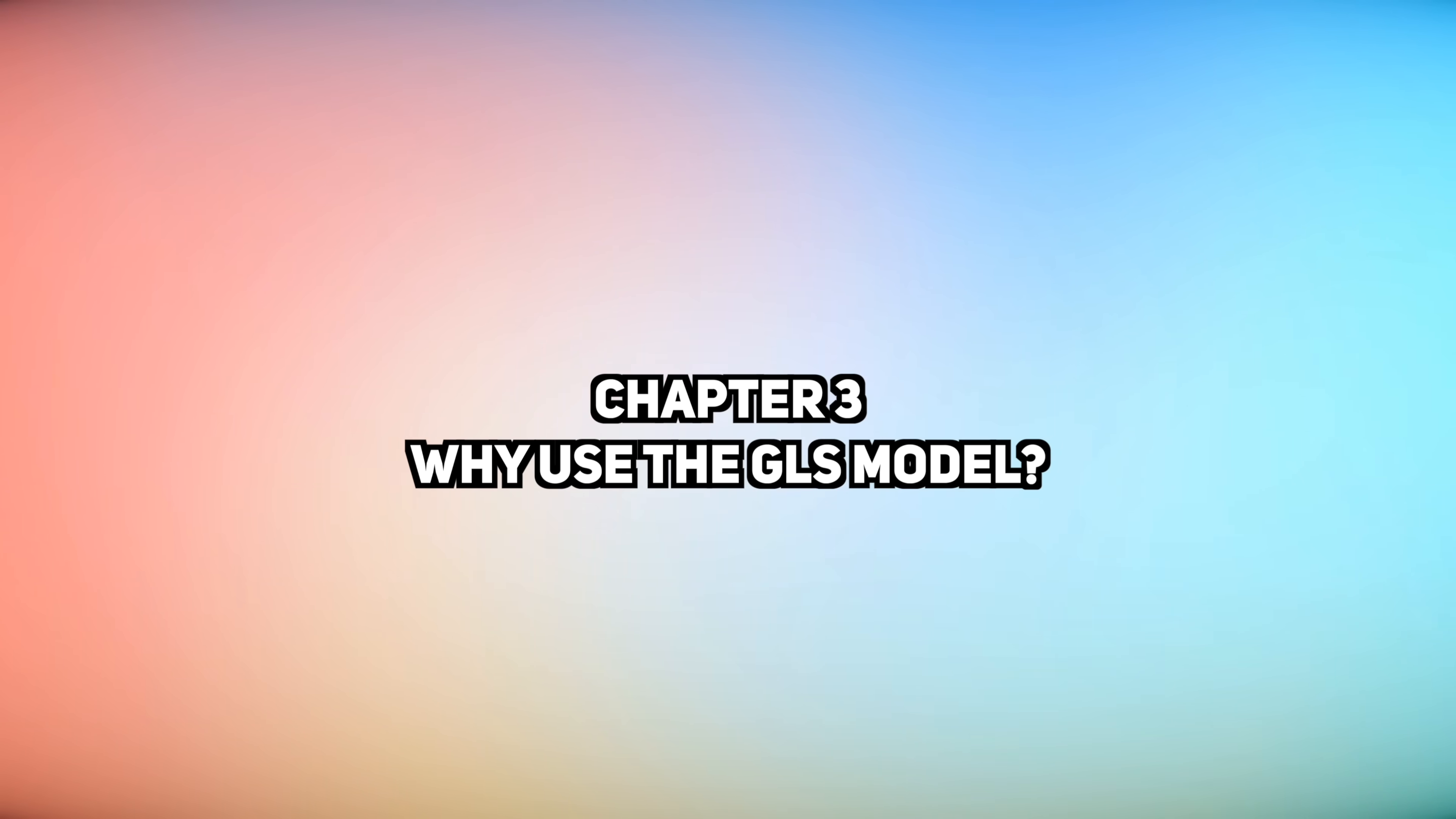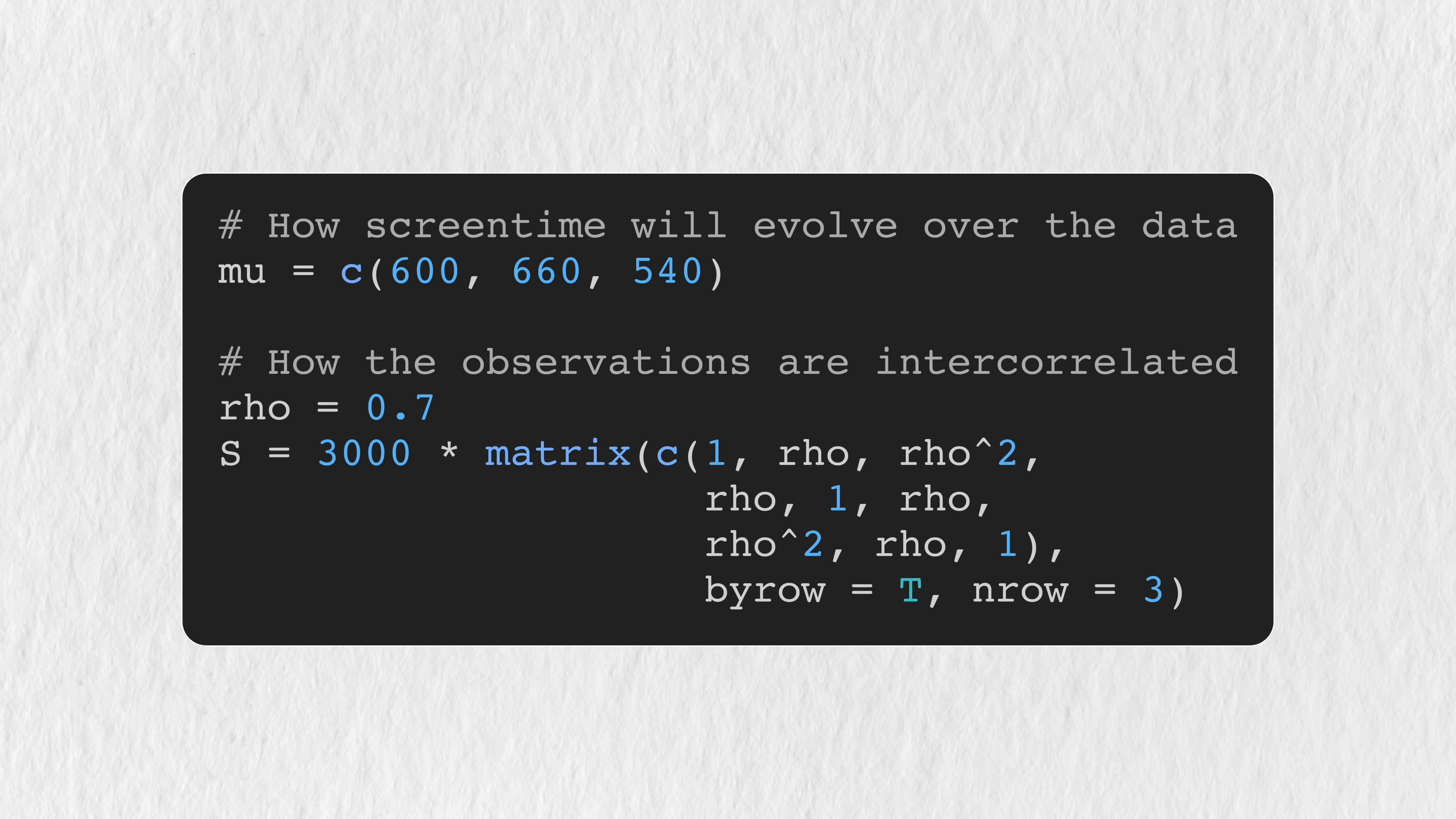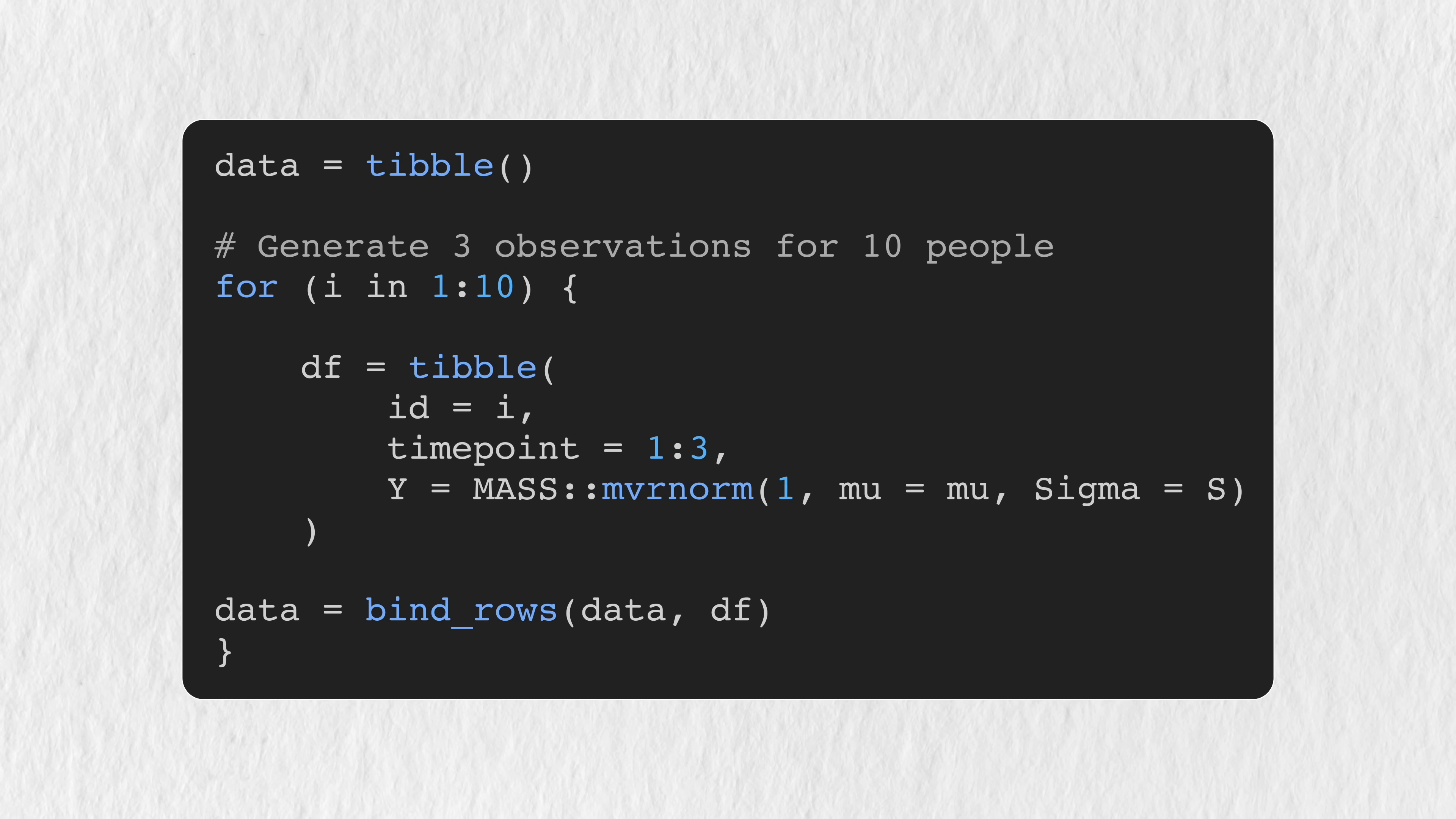I'm going to bring in three libraries, the tidyverse for data wrangling, mass for data generation, and nlme for its implementation of the GLS model. To generate the data, I'm going to repeat the following process for 10 distinct people. I'm going to generate data from a multivariate normal distribution to create three correlated observations for each person. I'll specify the mean vector for this distribution to be 600, 660, and 540. To indicate average screen time at the three time points in our example, I'm going to create a covariance matrix that has an auto-regressive structure to it. The precise values don't matter here, other than the fact that I'm going to make it such that the observations have a relatively high correlation of 0.7. If I run this code by itself, I'll get a sample from this three-variate normal. After running this loop, I'll have a dataset of 30 observations with 10 people in it.